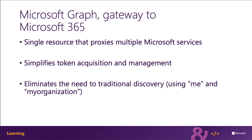Microsoft Graph also enables easy navigation of entities and the relationships between these entities. While there are many different Microsoft 365 services, such as OneDrive for Business or Outlook for Contacts and Calendars, these different entities are related to each other, and these relationships are in the Microsoft Graph, which makes it easy to navigate from one entity to another, even if it's across different underlying endpoints.